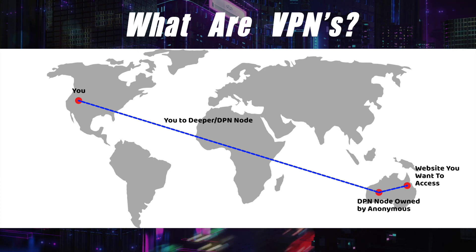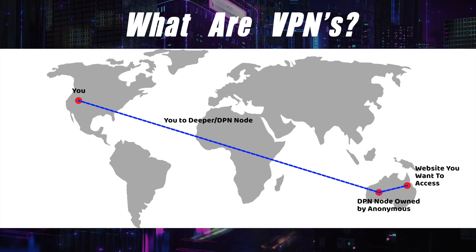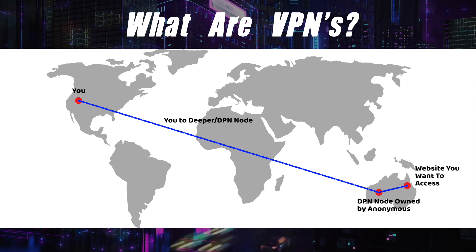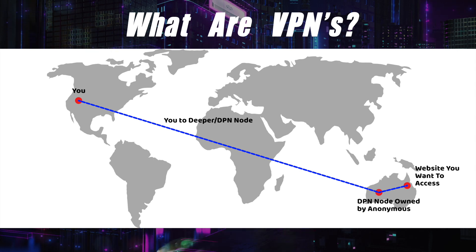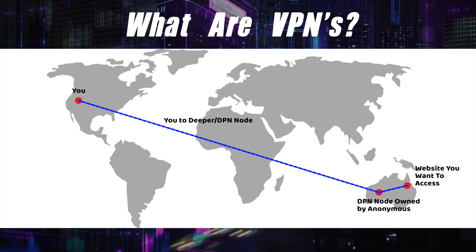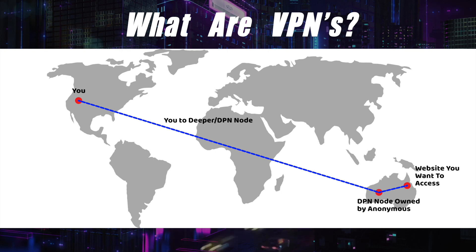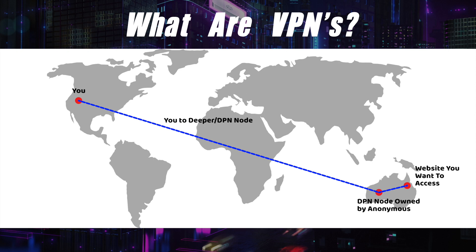We're actually connecting to a Deeper DPN node, a decentralized node. That node isn't owned by a registered corporation that might keep logs or see who you are. With a VPN, you've had to give them your credit card, so they know your name, your address, whereabouts you live. But with a DPN, you connect to somebody else's node in, say, Australia — you don't know who they are, and they don't know who you are. And Deeper Network doesn't know who you are, because at no point do you give them your name and address. The devices aren't linked to you, so nobody knows who you are.